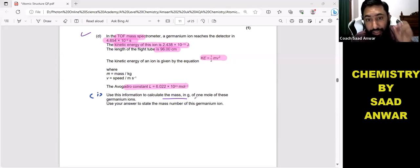So what we have to do here: we have to find these two things. Use this information to calculate the mass in grams of one mole, and use your answer to state the mass number of this germanium ion.